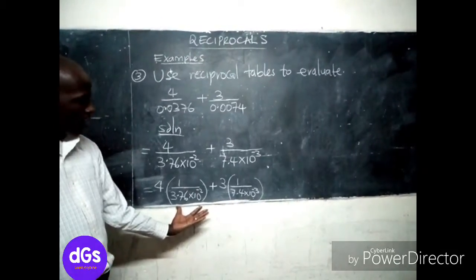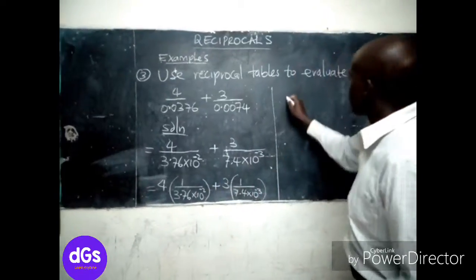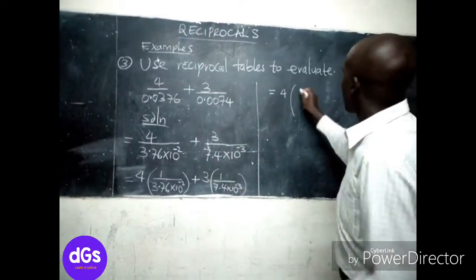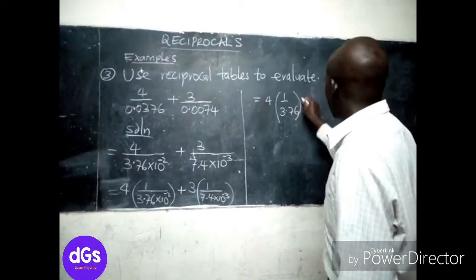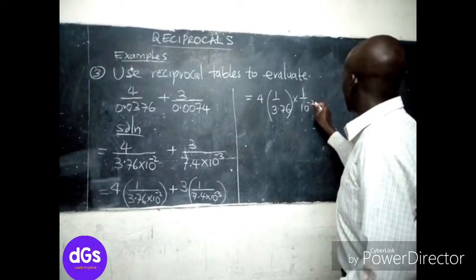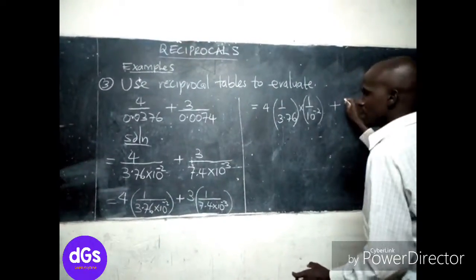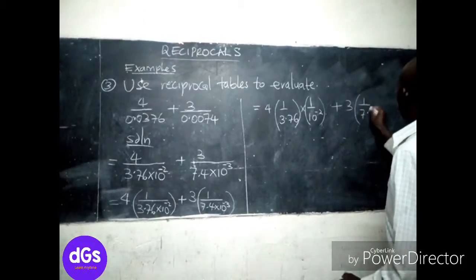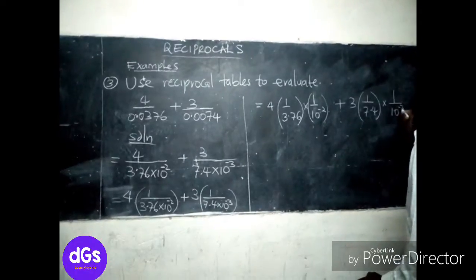So I'm going to say this will be equal to 4 by 1 over 3.76 times 1 over 10 power negative 2, plus 3 by 1 over 7.4 times 1 over 10 power negative 3.